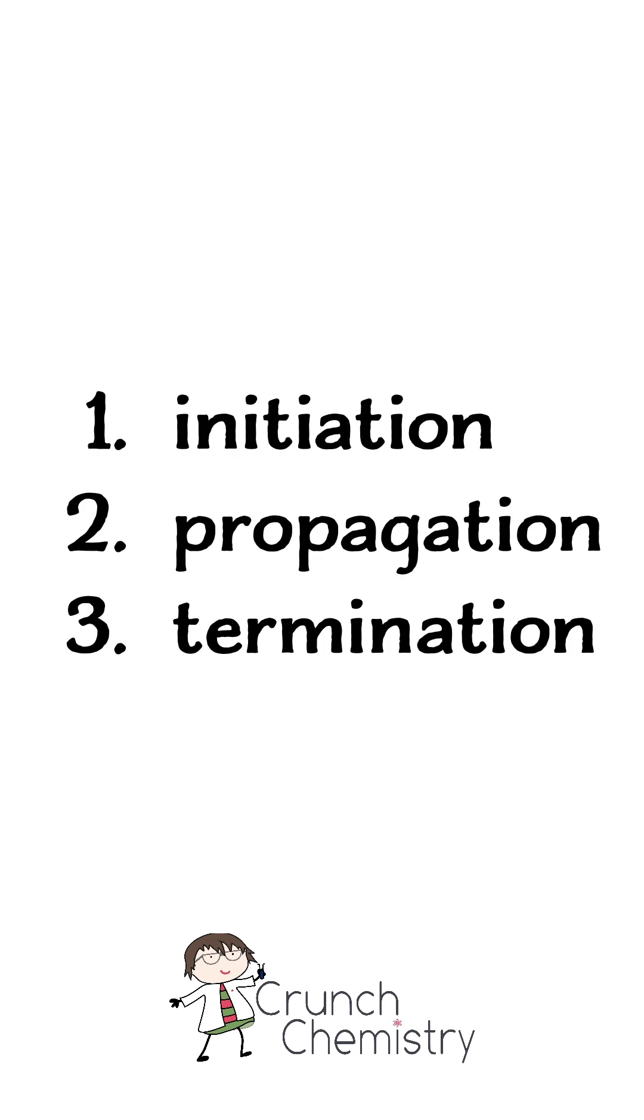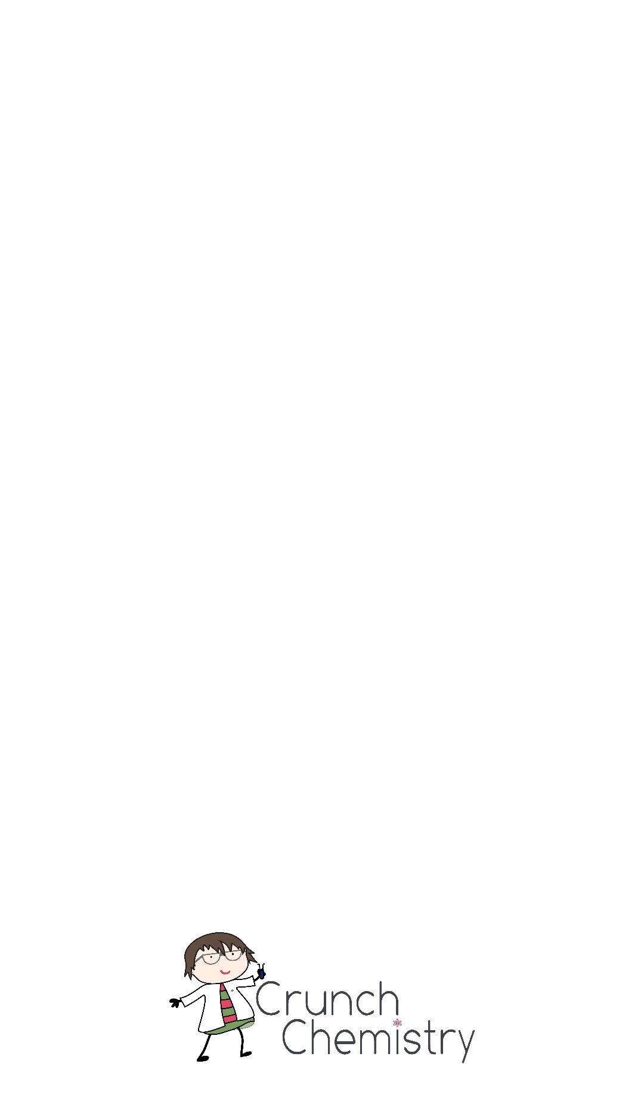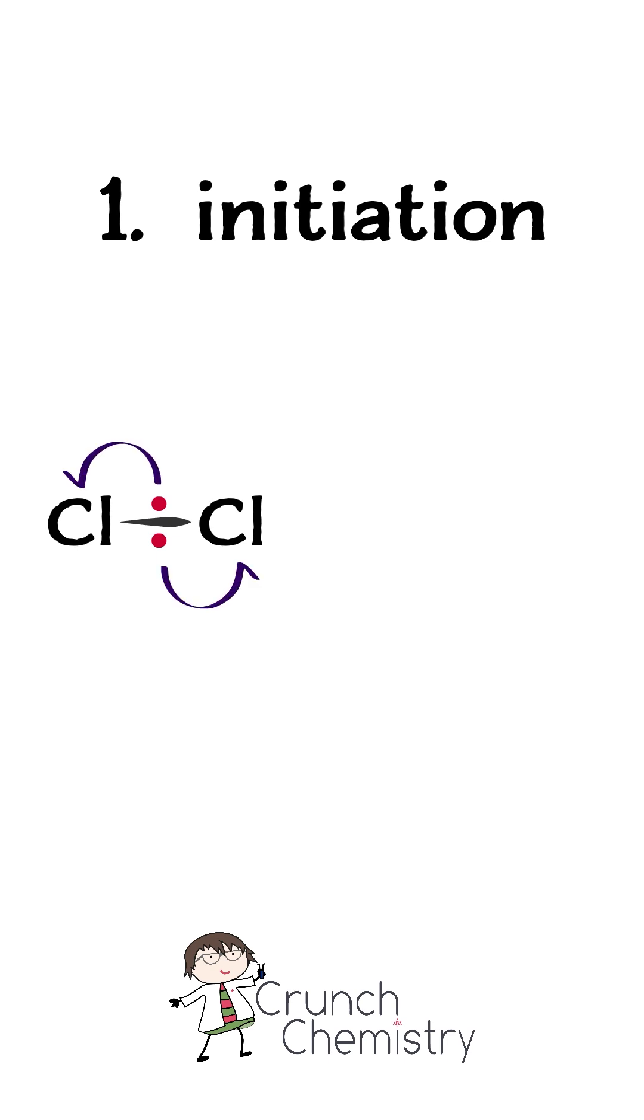There are three stages, and the first is initiation. UV radiation causes homolytic fission of the halogen-halogen bond, forming radical halogen atoms and starting a chain reaction, which ends in a haloalkane, such as chloromethane in this example.